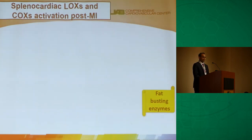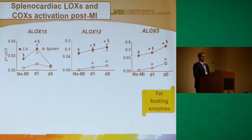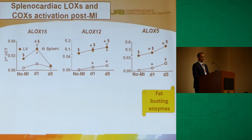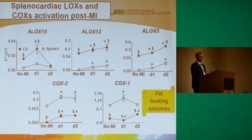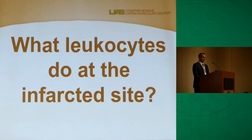Looking at the splenocardiac axis combining spleen and LV data, the lipoxygenase enzymes — LOX 5, 12, and 15 — are significantly increased mainly in the LV, while cyclooxygenase enzymes are mainly increased in the spleen. With these fat-busting enzymes and fatty acids, leukocytes at the infarcted site produce a large number of bioactive mediators.